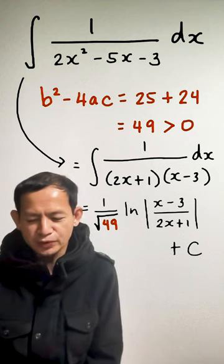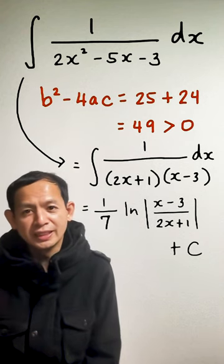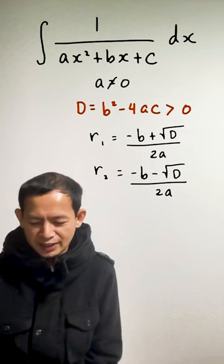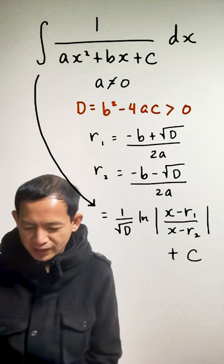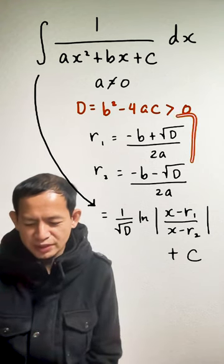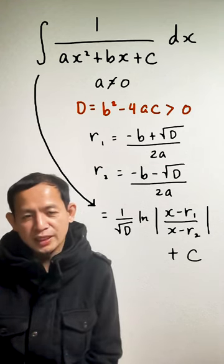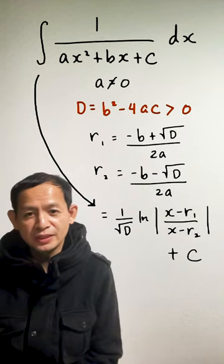Of course the square root of 49 here can be written as 7. And in general, the value of the integral is actually 1 over the square root of the discriminant ln of absolute value of x minus r1, which is the larger zero, over x minus r2, the smaller zero, and then plus c.